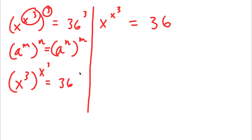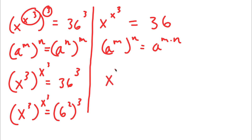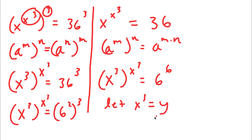This is equal to 36 to the power of 3. Now, 36 I can write as 6 to the power of 2. So now I have x to the power of 3 to the power of (x to the power of 3) is equal to 6 to the power of 2 to the power of 3. Using a to the power of m times n, 6 to the power of 2 to the power of 3 equals 6 to the power of 6. So now I have x to the power of 3 to the power of (x to the power of 3) is equal to 6 to the power of 6. I'm going to let x to the power of 3 equal the variable y, so now I have y to the power of y is equal to 6 to the power of 6.